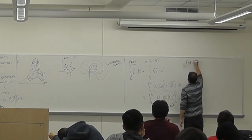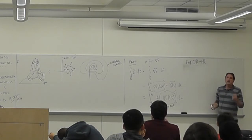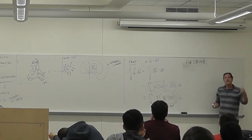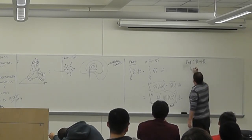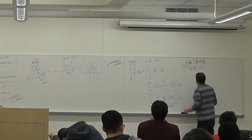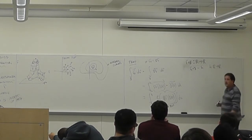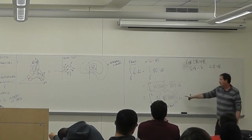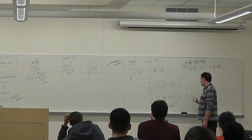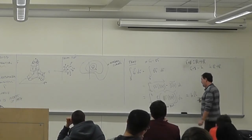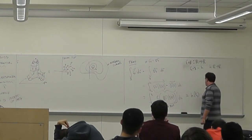F composed with gamma is a function from the reals to the reals. Put a number into gamma, it gives me a vector; I plug that vector back into f, it gives me a number out. Let's call it h. So this is a real-valued function from the reals to the reals. So this is just the ordinary fundamental theorem of calculus. This is h of t_1 minus h of t_0.